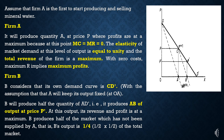OA is the level of output produced by Firm A. Now, based on the key assumption, Firm B assumes that Firm A will keep its output fixed at OA. Given this assumption, Firm B identifies its own demand curve to be CD', which is the remaining portion of the market demand.